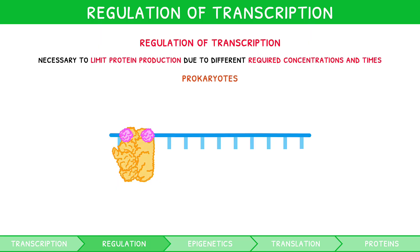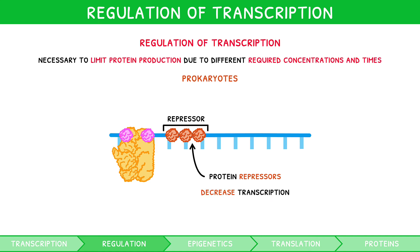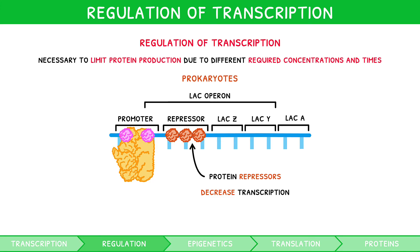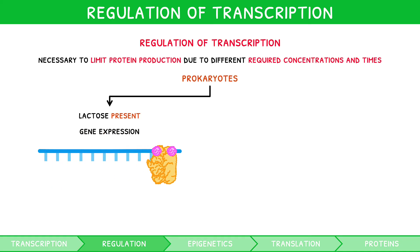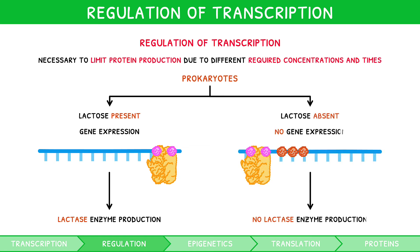In prokaryotes, proteins bind to DNA at the repressor binding region in response to environmental factors. These proteins are known as protein repressors, and they decrease the rate of transcription. An important term that arises in this context is lac operon, a collective term given to the promoter region, repressor binding region, and protein coding gene. A specific example of lac operon that appears in the exam is within E. coli. When lactose is present, lactose metabolism genes are expressed, and so enzymes transcribed to digest lactose are produced. However, when lactose is absent, they are not. This is because a repressor binding protein binds to the lac operon and blocks RNA polymerase from transcribing lactose metabolism genes, i.e. a negative feedback loop.